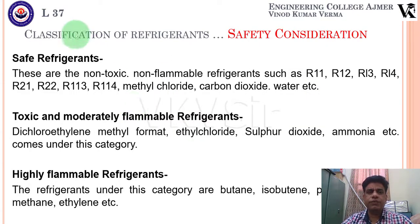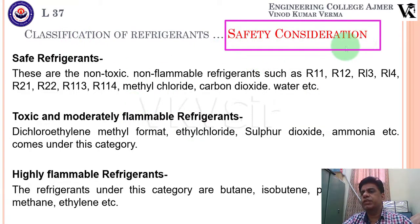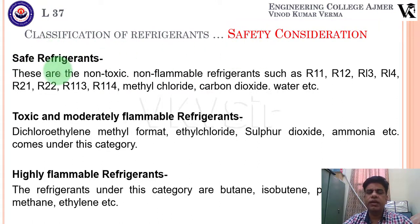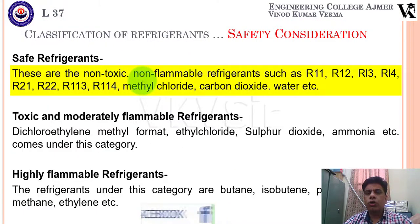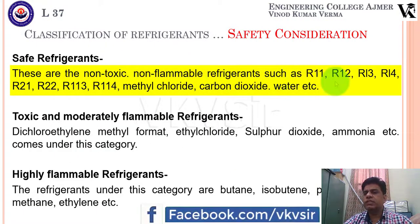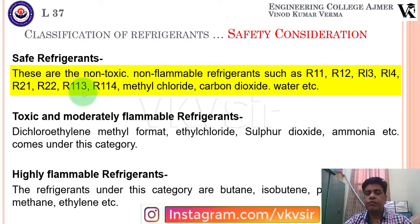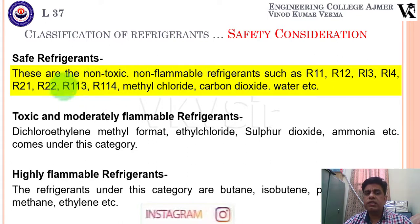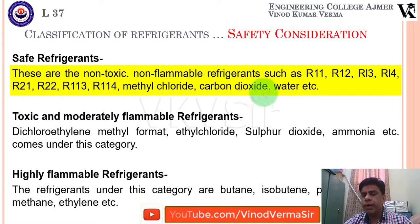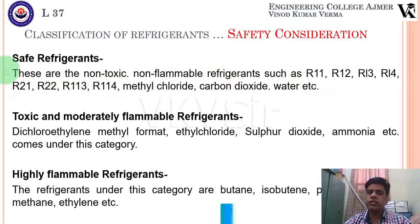Now let's look at the classification based on safety considerations. We have three categories. The first is safe refrigerants — non-toxic and non-flammable refrigerants such as R11, R12, R13, R14, R21, R22, R113, R114, methyl chloride, carbon dioxide, and water. These all come under the safe refrigerant category.